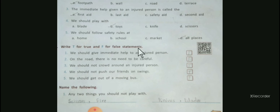Number one: We should give immediate help to an injured person. This statement is true. Number two: On the road there is no need to be careful. This statement is false. Number three: We should not crowd around an injured person. This statement is true.